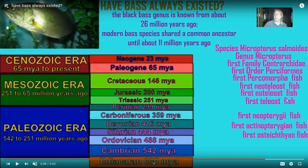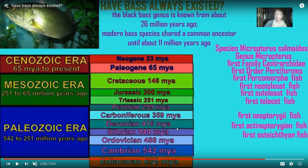After the chondrosteans, we get primitive neopterygians like the bowfin's ancestors. Notice that in all of the Paleozoic era, there are zero teleost fish. The first teleost fish originate in the Triassic period, and then they diversify. We could split them into subgroups, into orders like order Perciformes, into super orders, etc. The first members of the euteleosts come a little later — neoteleosts, percomorphs, the order Perciformes, the family Centrarchidae, which includes bass, the genus that bass are found in, etc. And so bass have not always existed.